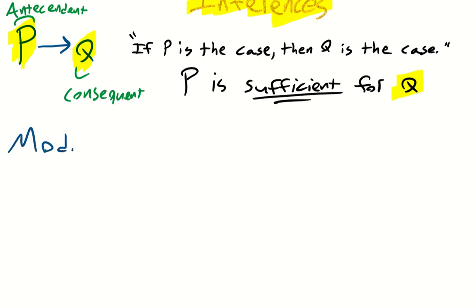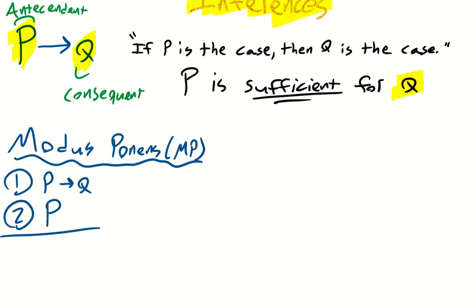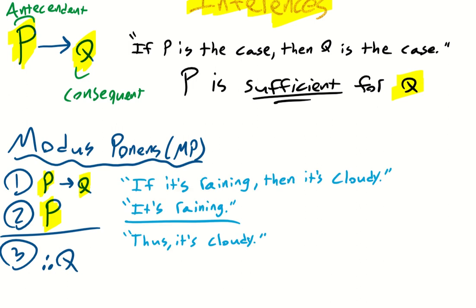The first major rule of inference is modus ponens, or MP for short. The first premise is if p, then q. The second premise affirms that antecedent: p is the case. Those three dots mean 'therefore.' Since we know the antecedent is sufficient for the consequent, we can affirm the antecedent to get q. For example: if it's raining, then it's cloudy. It is raining — thus it's cloudy. Since p is the case, q is the case.